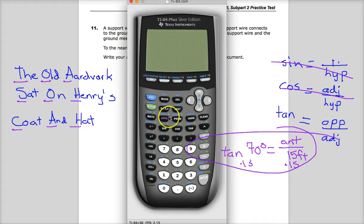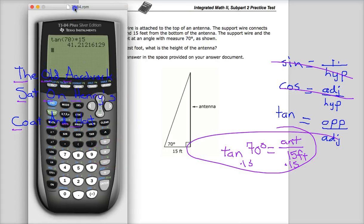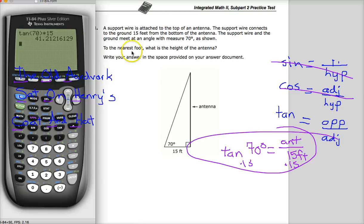So let's quit out of that. Tangent 70, and to get rid of divide by 15 you want to do the opposite operation so times 15, and you get your final answer of 41 point lots of numbers in a row. But the question specifically asks you to write your answer to the nearest foot.